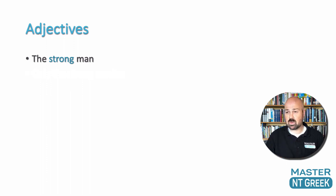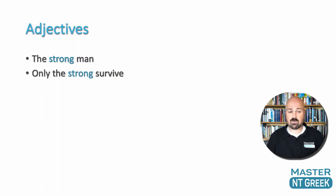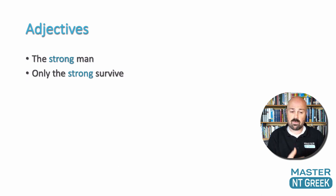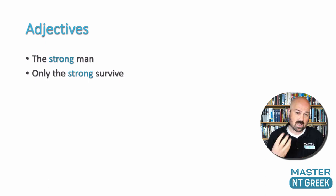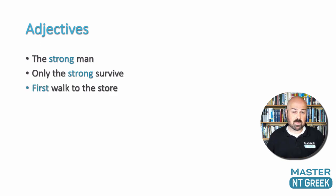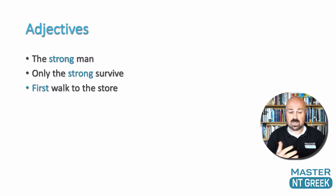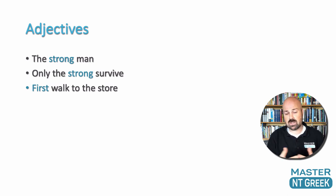Adjectives are not always used in exactly this way. Sometimes they can be used as a noun in their own right. For instance, 'only the strong survive' — here the adjective 'strong' is functioning as a noun in its own right, and the article 'the' is indicating that 'strong' is working as a noun. We sometimes also see adjectives modifying verbs. For instance, 'first walk to the store' — the word 'first' here is modifying 'walk,' which is a verb, so the adjective crosses over into the realm of an adverb.